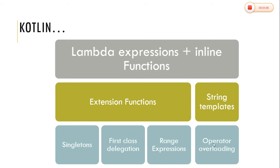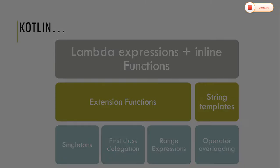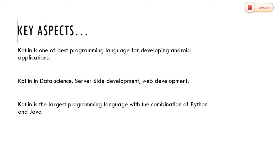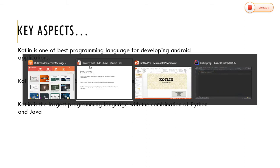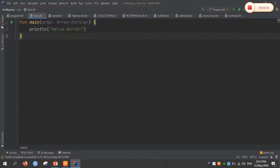Operator overloading is also present in Python. These are the features which Kotlin contains apart from Java. The key aspects include: Kotlin is one of the best programming languages for developing Android applications, and is used in data science, server-side development, and web development. It is a combination of both Python and Java.